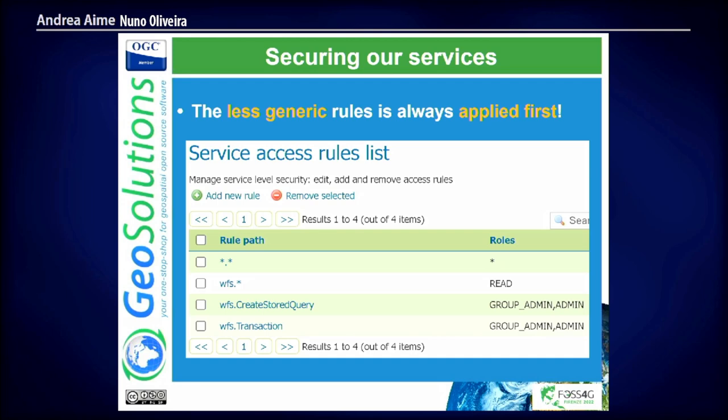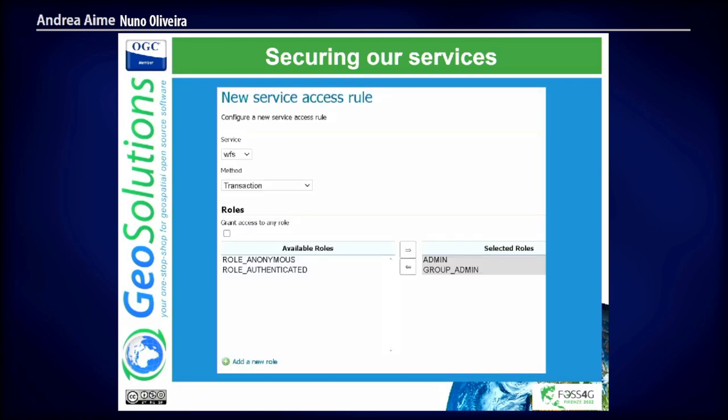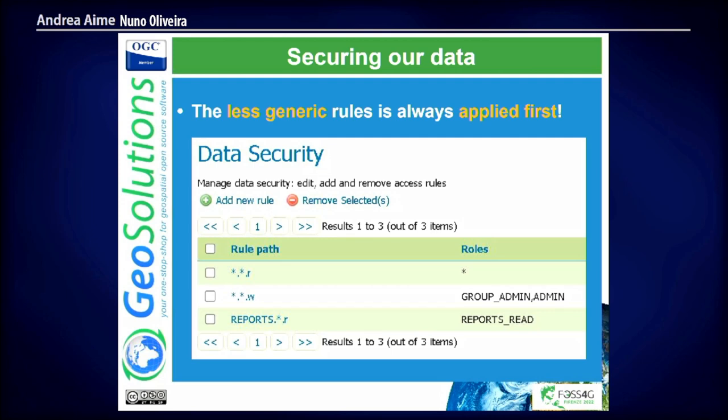How do we create a new service rule? Very easy: the service, the method, and we select the roles that can access it. That's why they are defined against roles — because the management is very easy. If a user has these five roles, or a group of users has these five roles, they will have access. For data security — the most common GeoServer security rules — we define which layers can be accessed. The same logic applies: everyone can read everything, only administrators can write data, and we have workspace-specific rules where only roles with a specific permission can read that sensitive data.